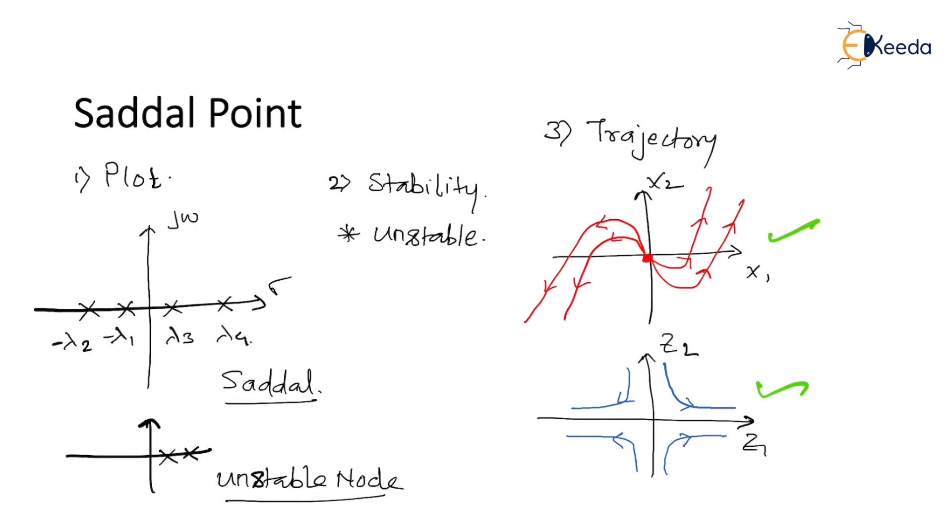As you can see, the trajectories are merging away from the origin. So three points once again: saddle point pole zero plot - few poles on the RHS and few poles on the LHS of the S plane. Second, stability - since few poles are on the RHS, the system is unstable in nature. And the trajectories are also diverging away from the equilibrium point.